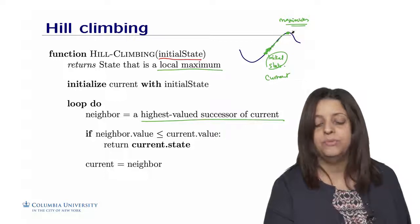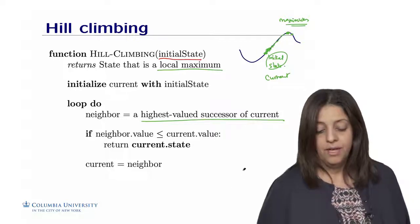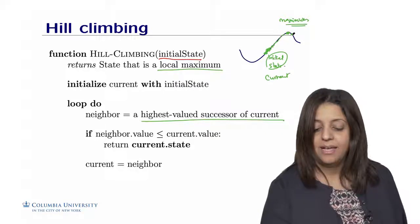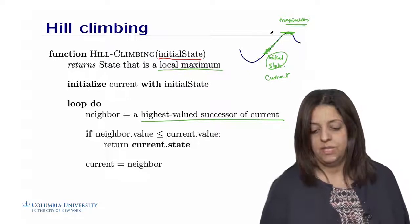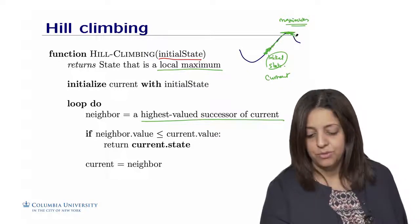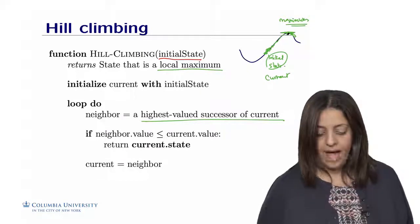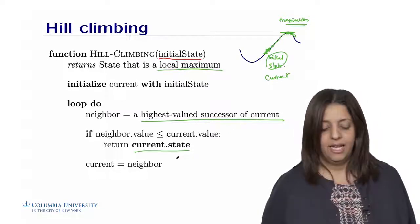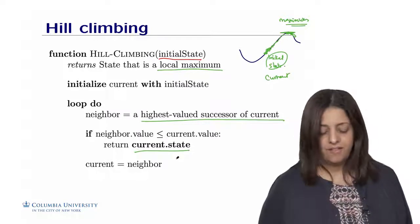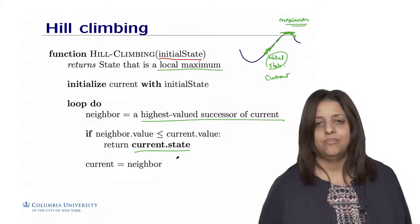Until at some point we reach the point where the next neighbor or the highest valued element has a lower value than the current neighbor, which means in this case that we reach that maximum. And if we go any further, we're going to go down instead of going up. So if we find this highest point, then we're going to return the current.state. Remember, each node has a state and a value. So we are going to use the value to go up the hill. But then once we find the best value, we stop and we return that state.